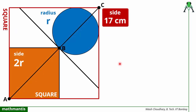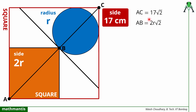Coming back to the question, I see two diagonals here. I have defined the points A, B, and C. I can define the diagonal AC of the red square. Since the side is 17, the diagonal AC is 17√2. I can also define the diagonal of the orange square — AB is its diagonal. Since the side is 2r, AB is 2r√2. So whatever the side is, multiplied by √2 gives the diagonal length.